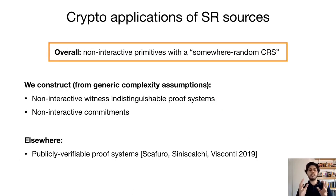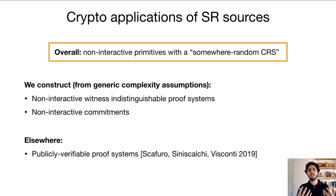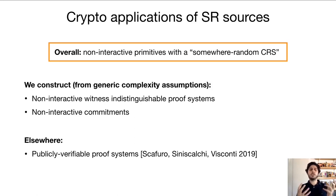We can take this one-sided error idea further and apply it to cryptography. In our paper we used this idea to design non-interactive primitives that work with a SoMa random source as a CRS, as opposed to a perfectly uniform CRS. In particular, from generic assumptions, we construct non-interactive witness-indistinguishable proof systems and non-interactive commitments, and there's also another work where publicly verifiable proof systems are discussed in the same setting. As we can see, there are a lot of applications of SoMa random sources.